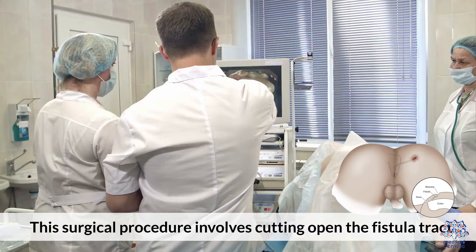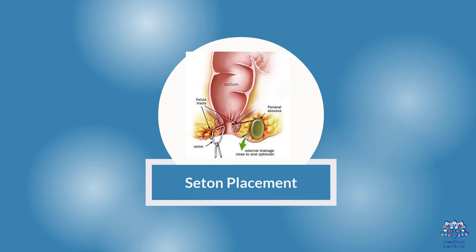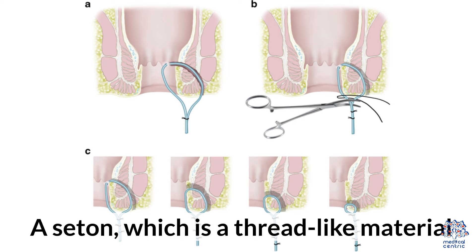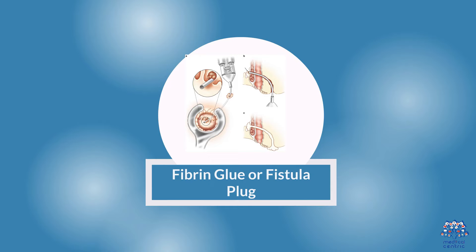Treatment Options for Anal Fistula. 1. Fistulotomy: This surgical procedure involves cutting open the fistula tract and allowing it to heal from the inside out. 2. Seton Placement: A seton, which is a thread-like material, is placed in the fistula tract to promote drainage and gradual healing.